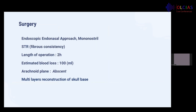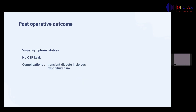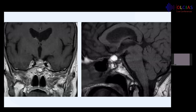Preoperative CT scan was reviewed. The patient underwent surgery via the endoscopic endonasal approach, mononostril approach. We performed subtotal resection due to fibrous consistency. Length of operation was 2 hours and estimated blood loss was 100 milliliters. No arachnoid plane was found. Multilayer reconstruction of the skull base was performed. Postoperative outcome: visual symptoms were stable, no CSF leak, but transient diabetes insipidus and hypopituitarism were noted.